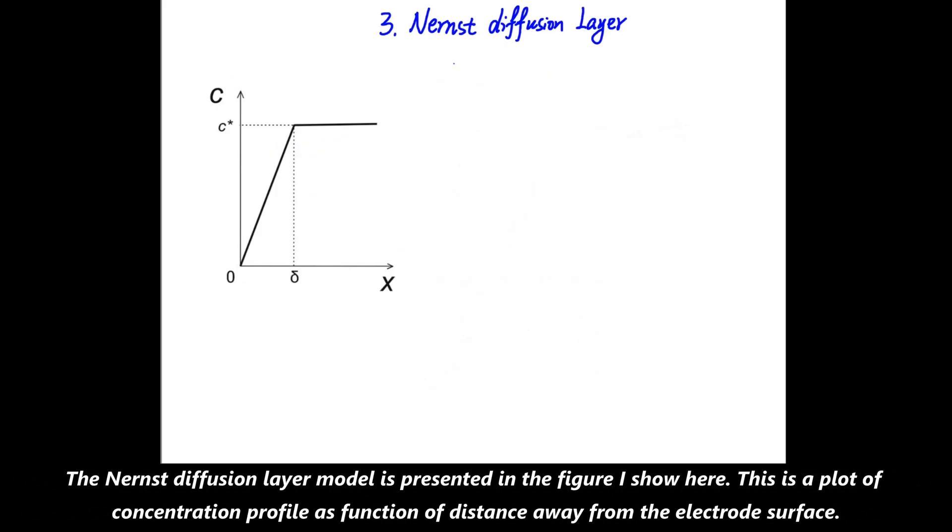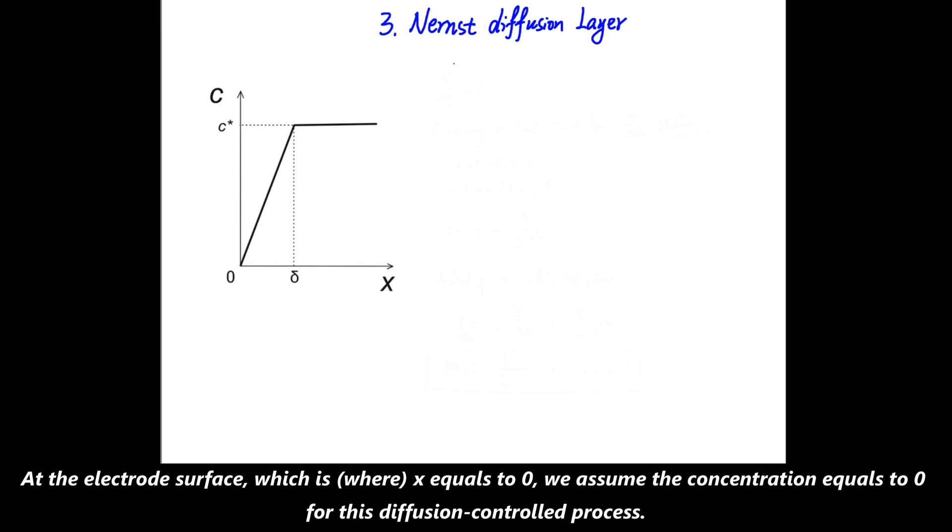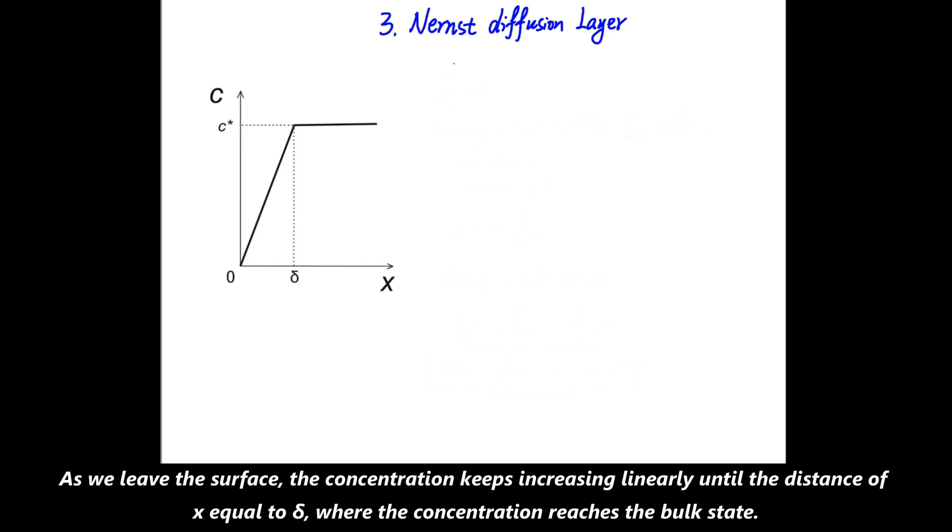The Nernst diffusion layer model is presented in the figure I show here. This is a plot of concentration profile as a function of distance away from the electrode surface. At the electrode surface, which is x = 0, we assume the concentration equals to zero for this diffusion-controlled process. And as we leave the electrode surface, the concentration keeps increasing linearly until the distance of x = δ, where the concentration reaches the bulk state.